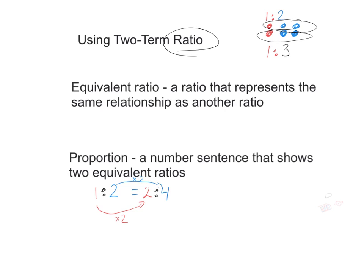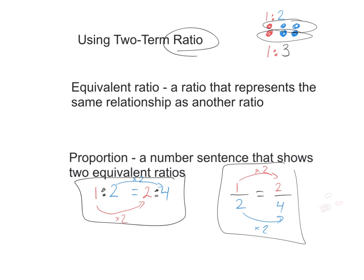Just a reminder, we could have actually written our ratios as a fraction. So we could write 1 over 2 equals 2 over 4. You can see the exact same thing holds true: 1 times 2 gives us 2, and 2 times 2 gives us 4. So both of these are what we call proportions — they're just a number sentence showing us two equivalent ratios.